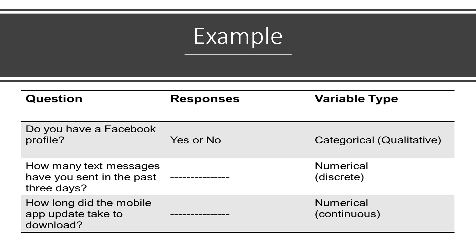Here are some examples. First: 'Do you have a Facebook profile?' Your response can be either yes or no. Because your response can be divided into two categories, it is a categorical or qualitative variable.